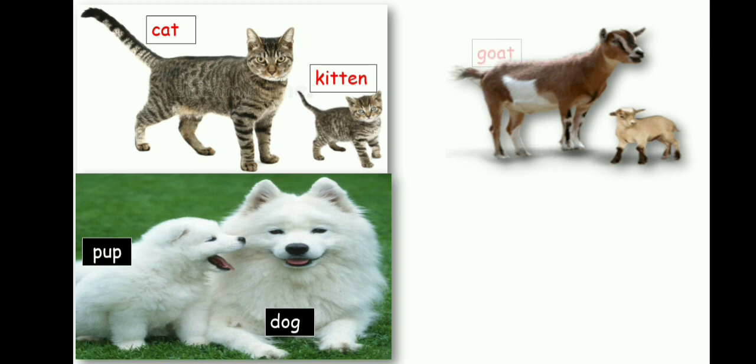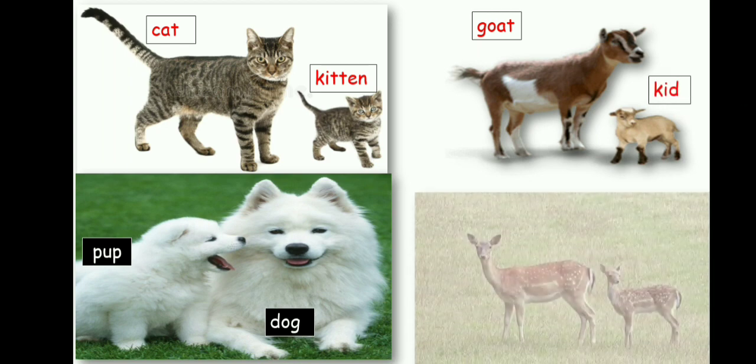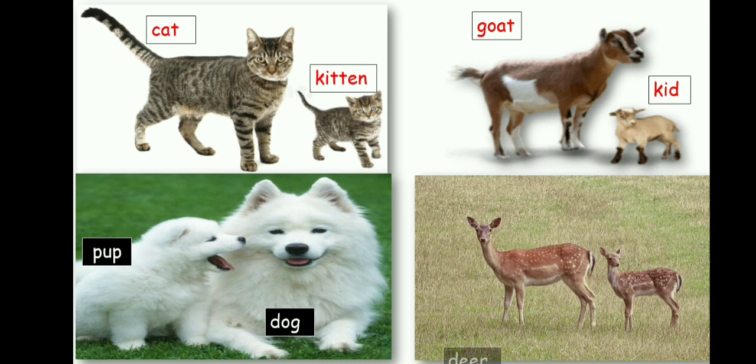The young one of a goat is called a kid. The young one of a deer is called fawn.